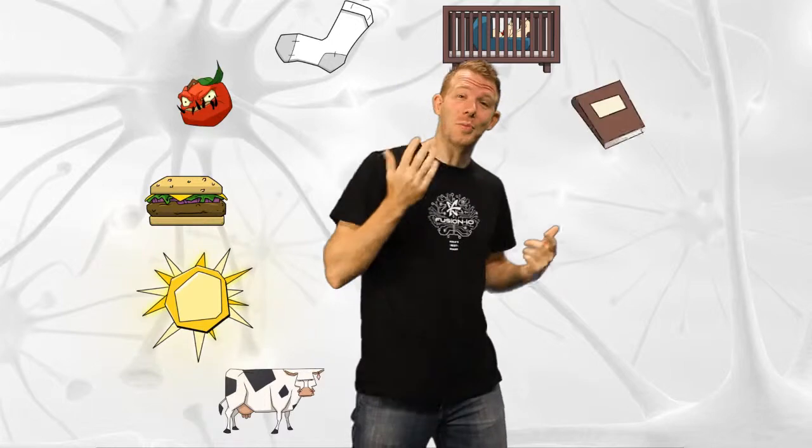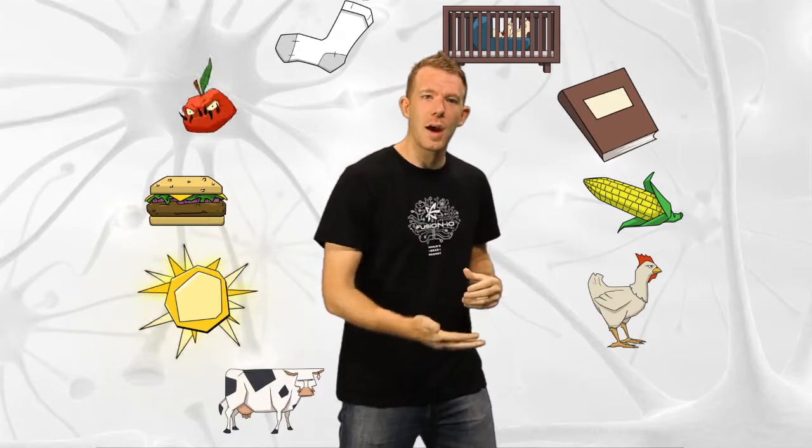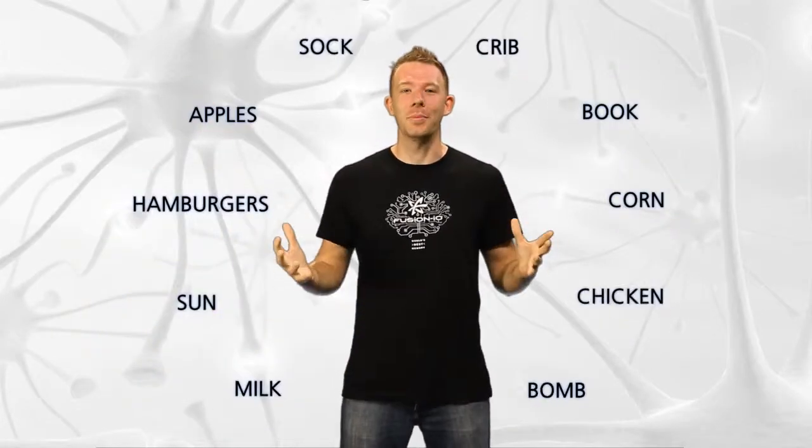Then I throw a disgusting sock into a baby's crib. The baby hits me on the back of the head with a book, which lands on the floor. Corn grows out of it. The chicken walks out and starts eating the corn, chew it away, then a bomb blows up the chicken. Unforgettable. Even when the words are gone.